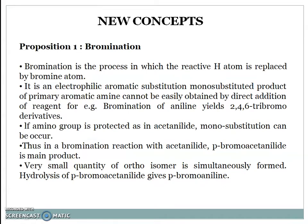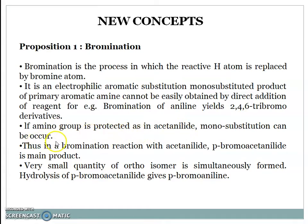New concept. Proposition 1: Bromination. Bromination is the process in which a reactive hydrogen atom is replaced by a bromine atom. It is an electrophilic aromatic substitution. Mono-substituted product of a primary aromatic amine cannot be easily obtained by direct addition of reagent. For example, bromination of aniline gives the 2,4,6-tribromo derivative. If the amino group is protected as in acetanilide, mono-substitution can occur. Thus, in the bromination reaction with acetanilide, para-bromoacetanilide is the main product, and a very small quantity of ortho-isomer is simultaneously formed.